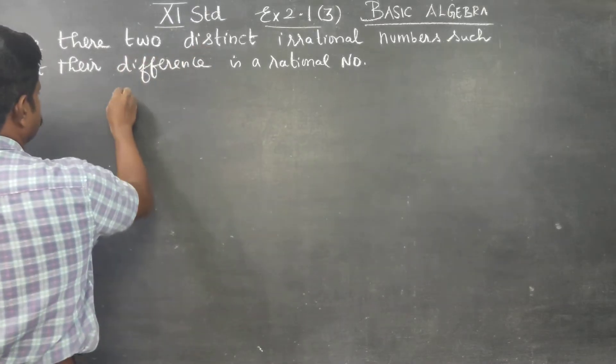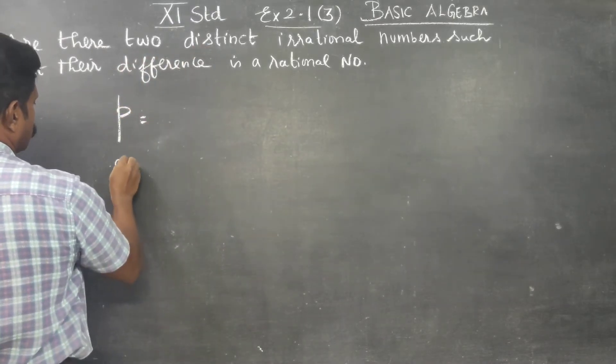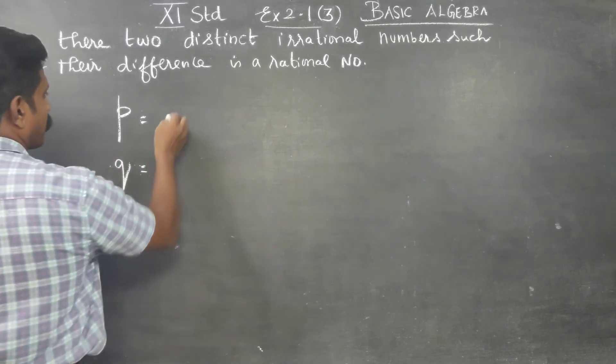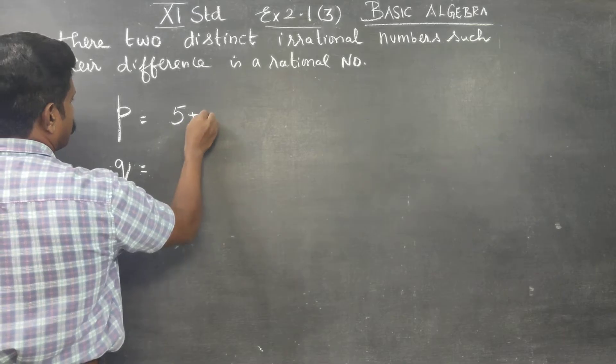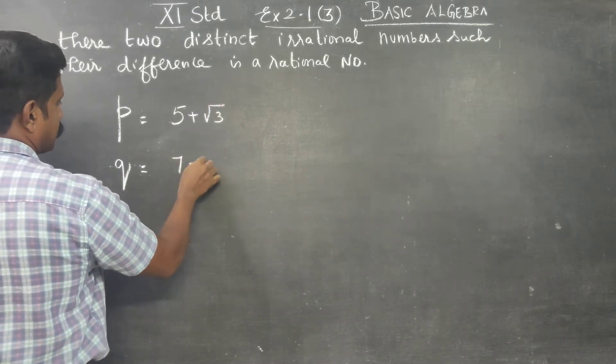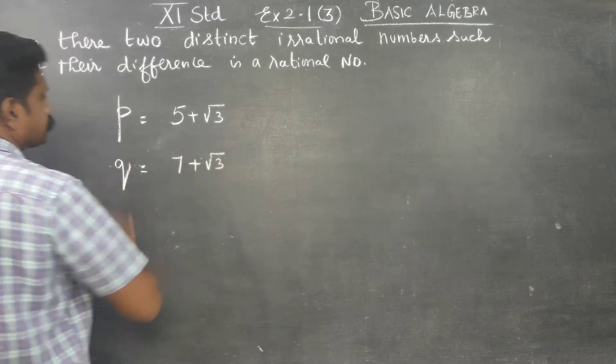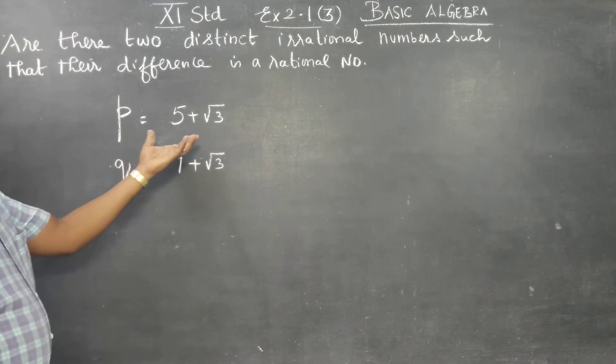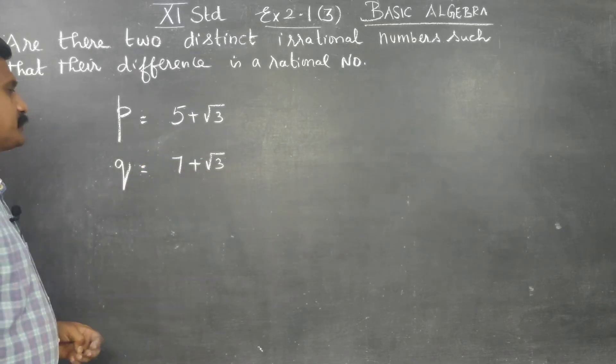Let us assume two irrational numbers, P and Q. Let it be 5 plus root 3. 7 plus root 3. Naturally this is an irrational number, this is an irrational number.